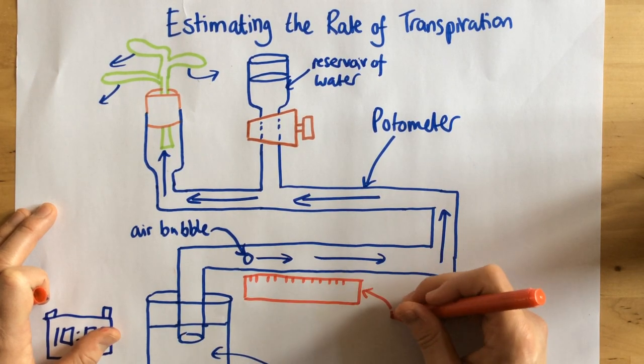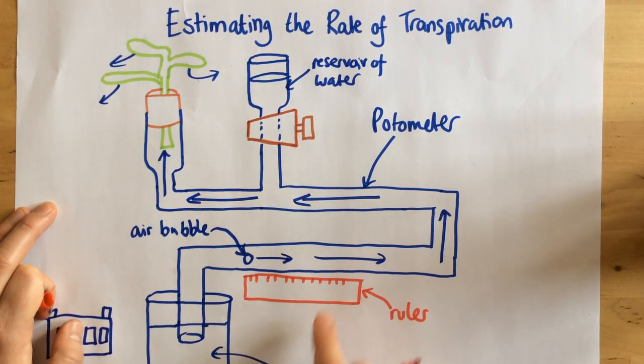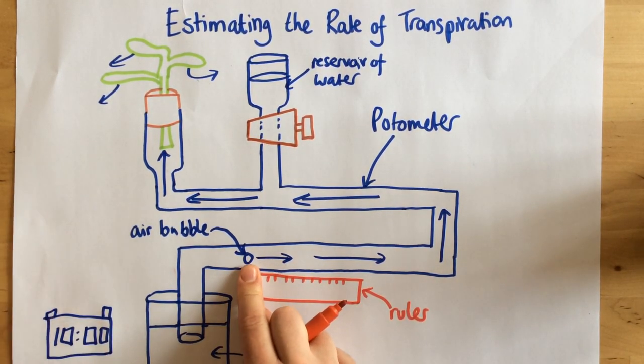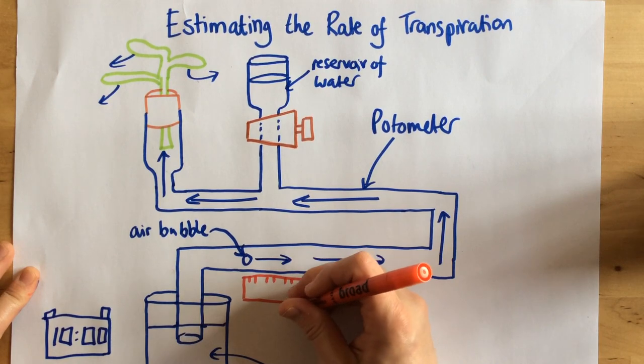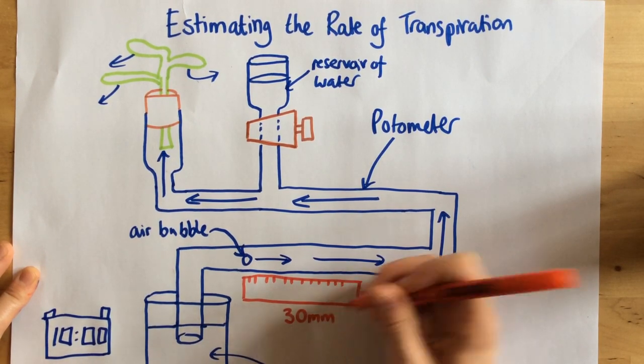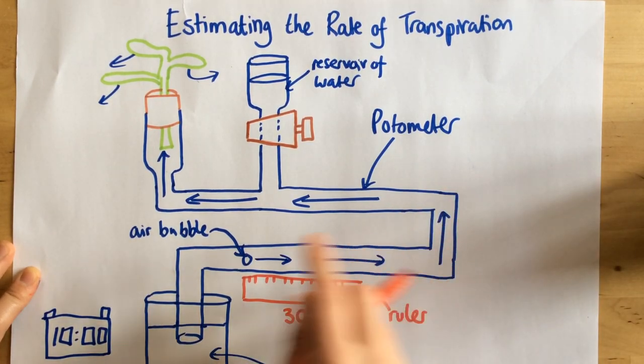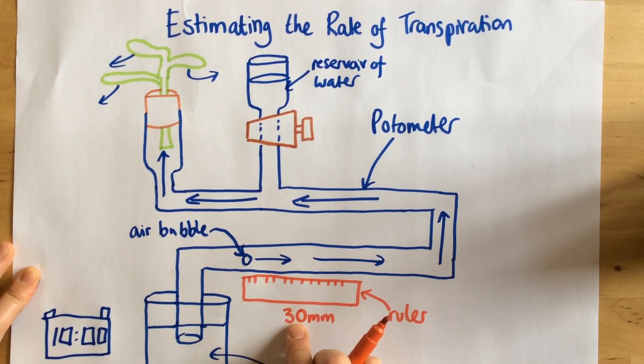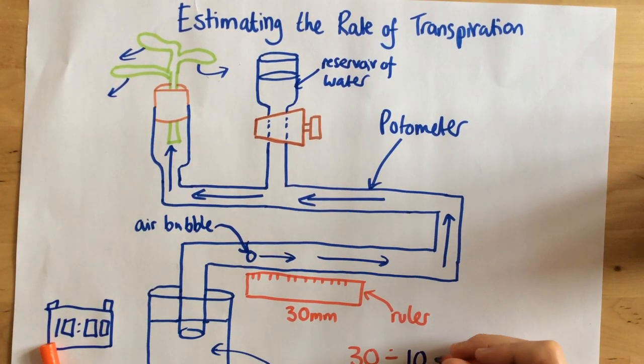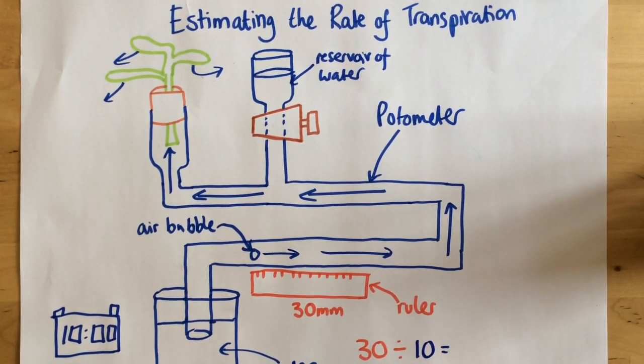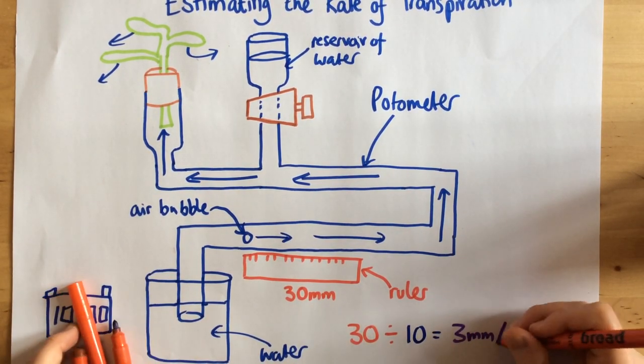And I need to measure how far that air bubble moves in 10 minutes. So let's say, for sake of argument, I've left it 10 minutes and in 10 minutes it's moved 30 millimetres. What I need to do now is I need to calculate the rate of transpiration. So if it's travelled 30 millimetres in 10 minutes, all I need to do is find out how far it's moved every single minute. So the answer is every single minute it's travelled 3 millimetres.